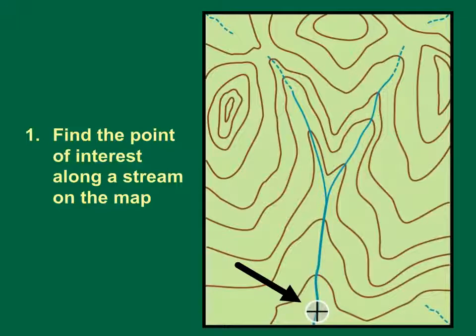The first step in the watershed delineation process is to find the point of interest along a stream on your topographic map. This diagram is a hypothetical area on a topographic map. The solid blue lines represent a perennial stream.